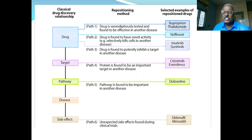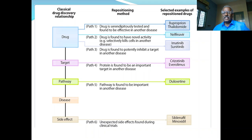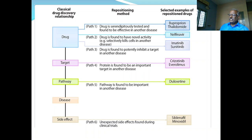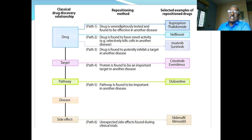Pathway five: a pathway is found to be important in another disease. Example: duloxetine — an antidepressant, a 5-HT and noradrenaline reuptake inhibitor. It selectively concentrates these amines in the brain, giving antidepressant activity. However, the 5-HT and noradrenaline signaling is also involved in spinal cord activation and the external urethral sphincter. Based on this pathway, duloxetine is now used for treatment of chronic musculoskeletal pain or fibromyalgia. An antidepressant is used for the treatment of fibromyalgia.